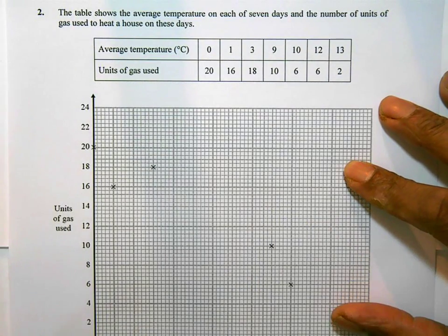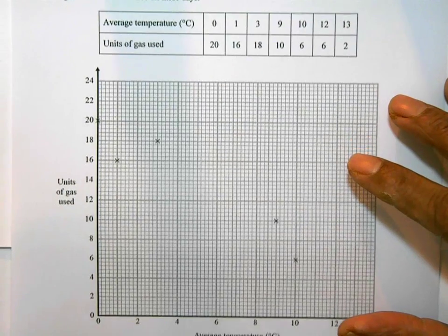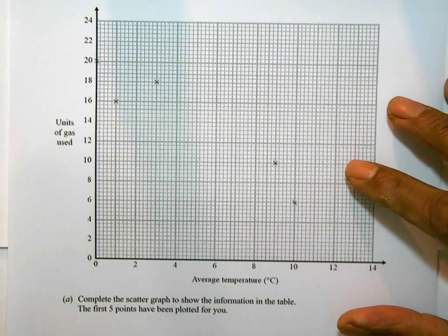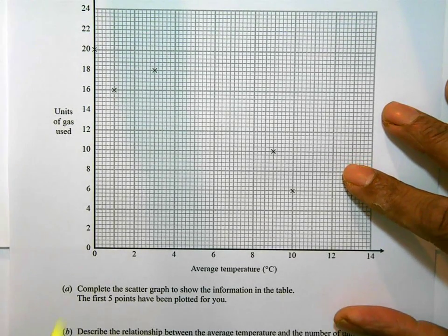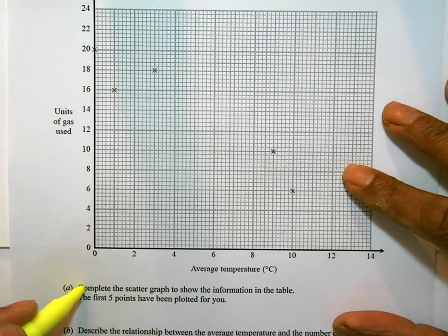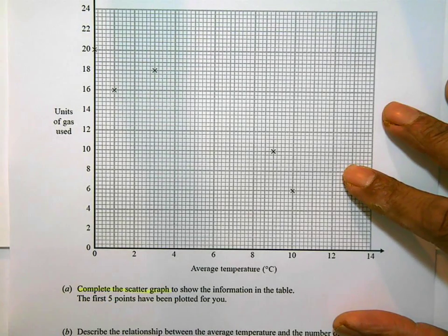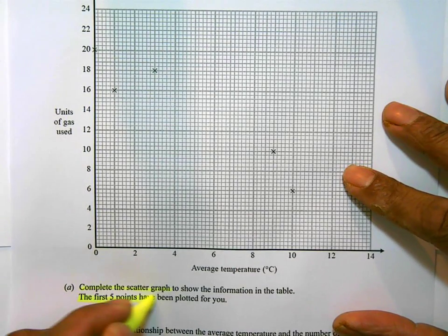Looking at part A, part A says complete the scatter graph to show the information on the table. The first 5 points have been plotted for you.